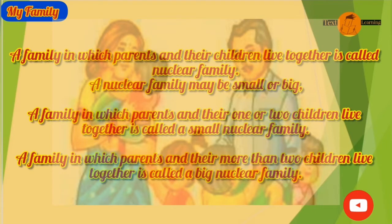A family in which parents and their one or two children live together is called a small nuclear family. A family in which parents and their more than two children live together is called a big nuclear family.